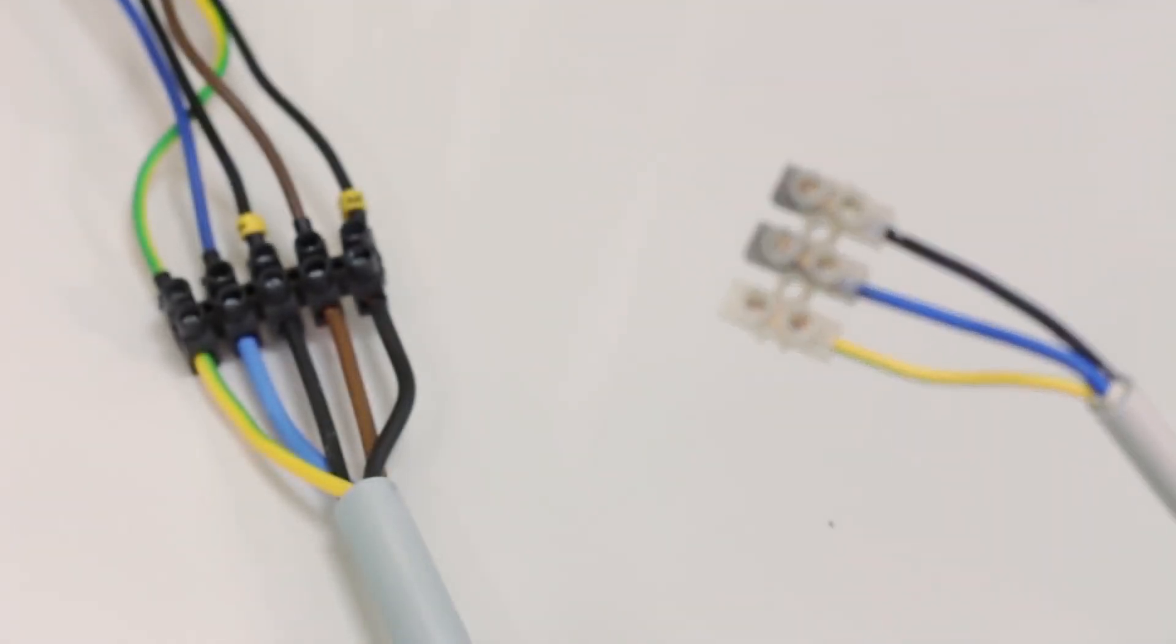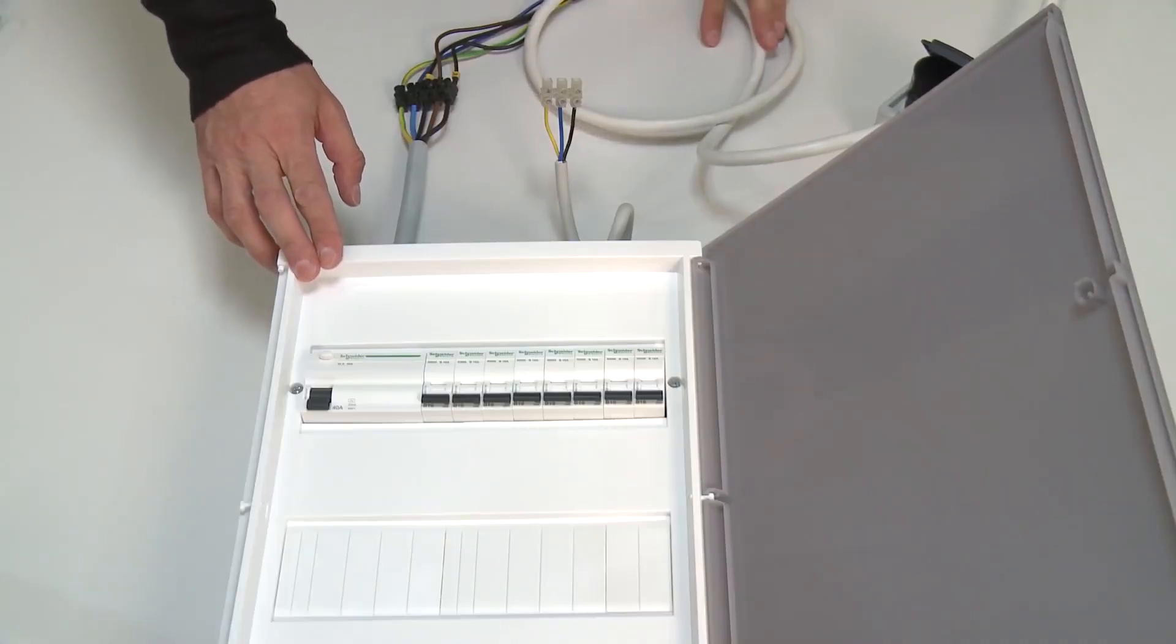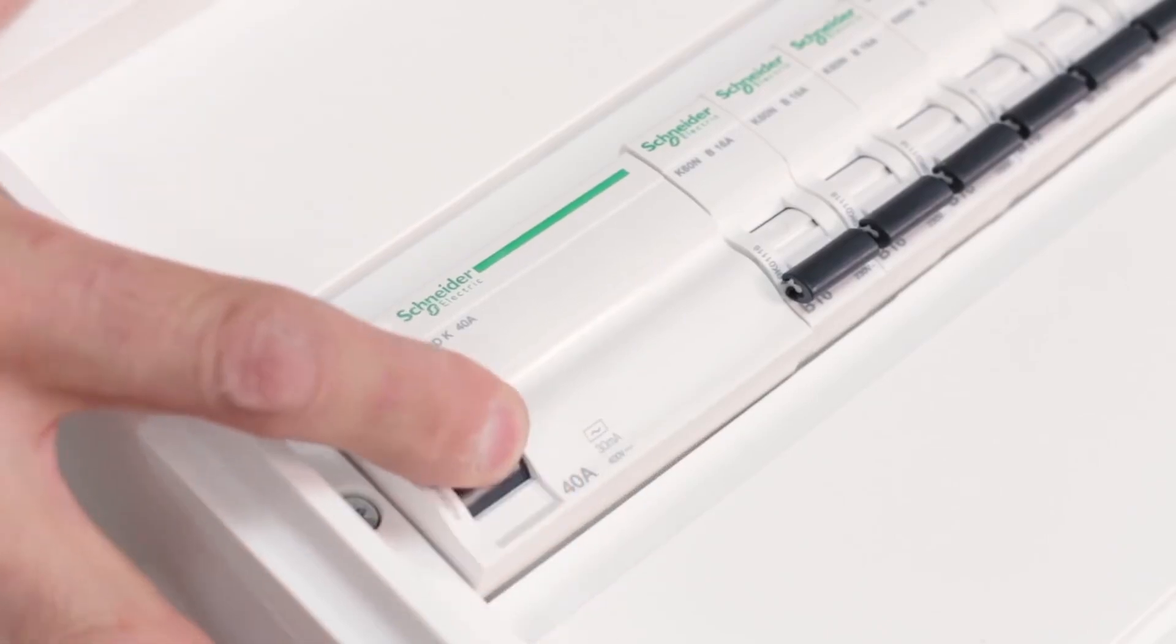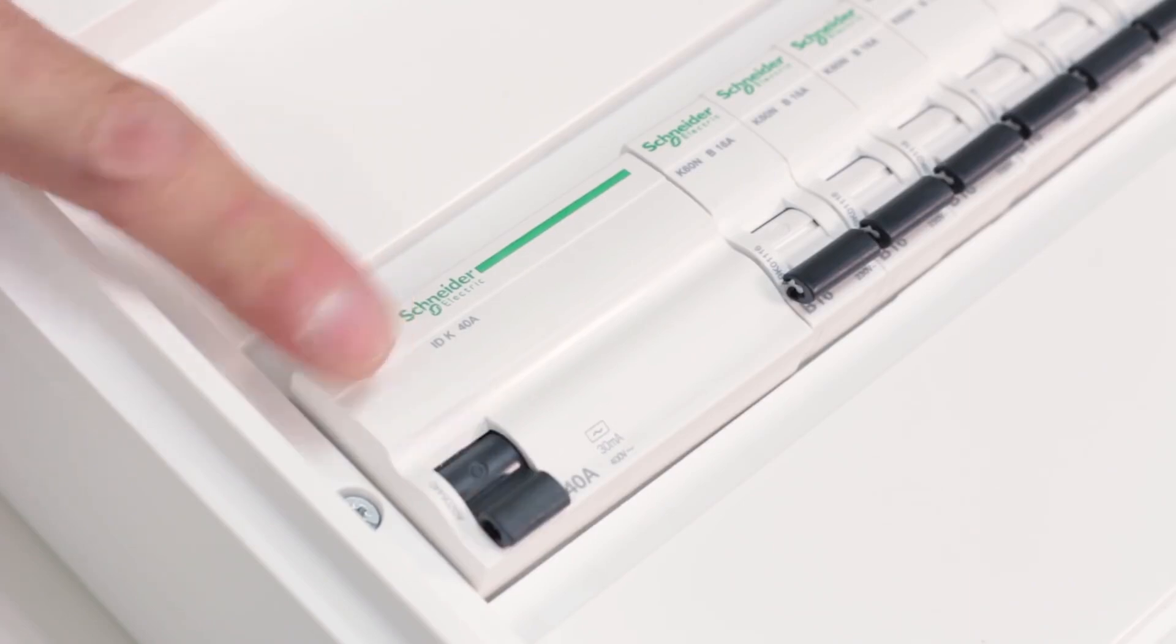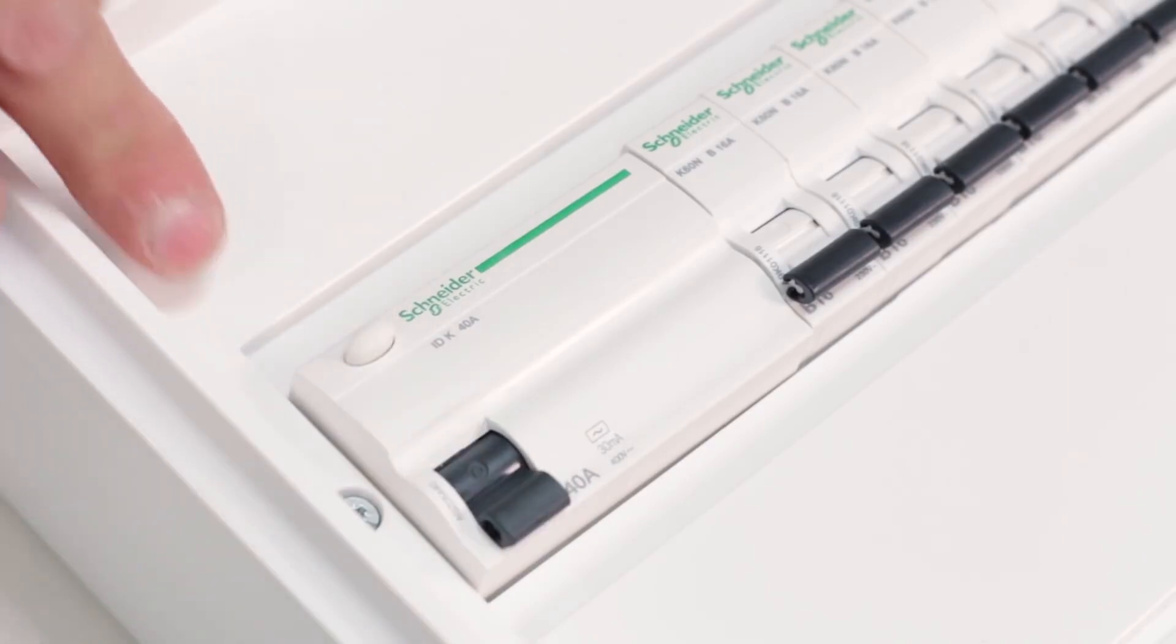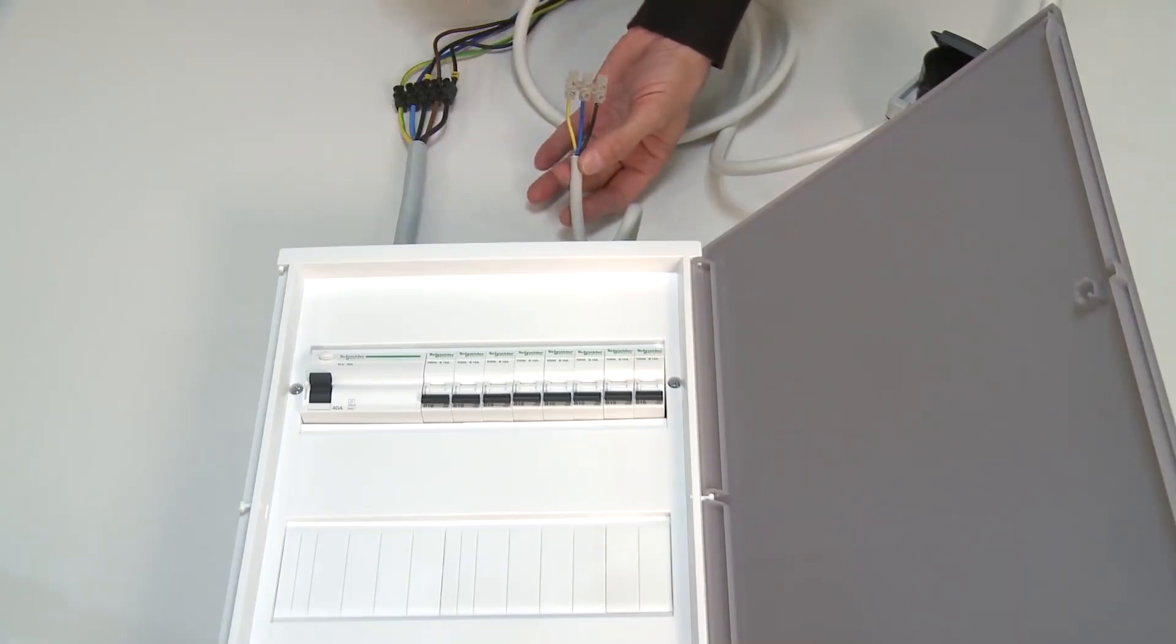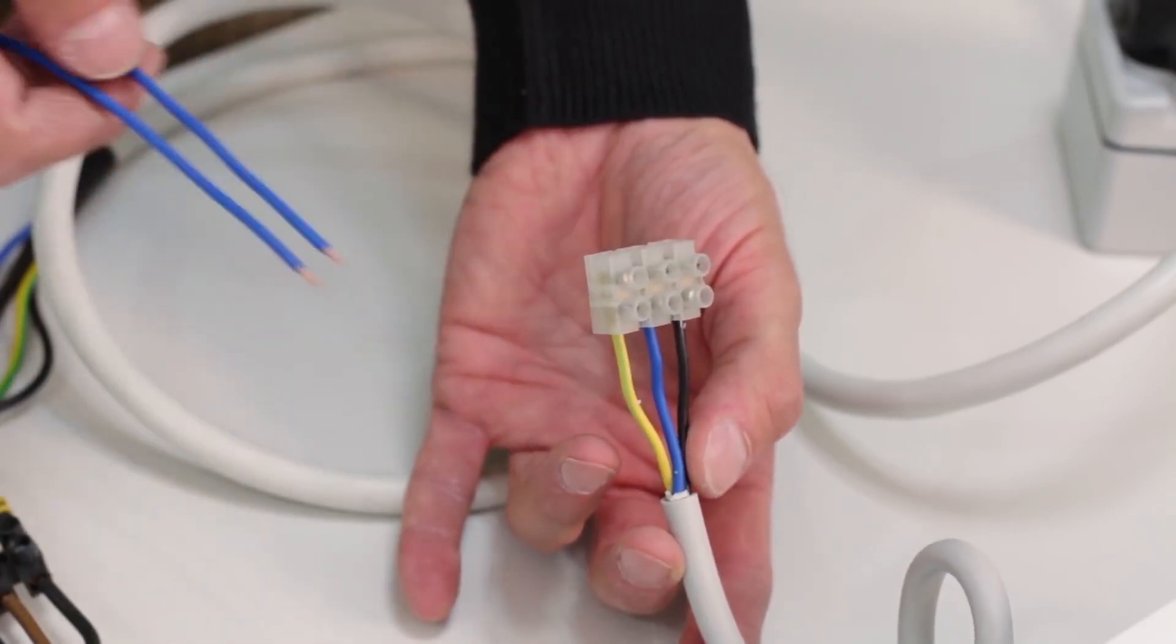So now we have connected our switchboard to the power supply and we will perform the mandatory testing of the RSD device. We put it in the on position and with its button intended for testing we check it. Here we can see that it starts working and it trips. We will now test the functionality of the RSD device by connecting the neutral and protective conductor, for example the grounding conductor from any circuit coming out of the switchboard.